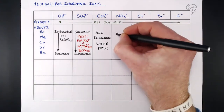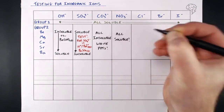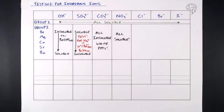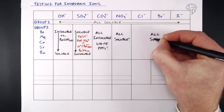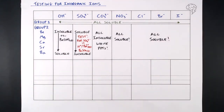Nitrates are easy — they're all soluble. It could be Group 1, Group 2, or anything in the periodic table: if it's a nitrate, it's soluble. It's not going to be a precipitate. Group 2 halides are the same: beryllium chloride, calcium bromide, barium iodide — whatever combination — they're all soluble, no precipitates. So with Group 2, you get precipitates from hydroxides at the top, sulfates at the bottom, and all carbonates; but nitrates and halides are always soluble.